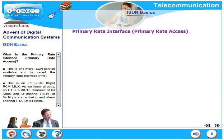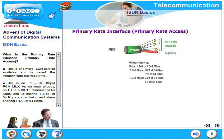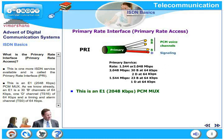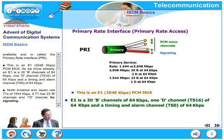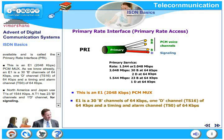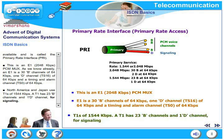Now let us look at PRI — Primary Rate Access. PRI is based on an E1 PCM MUX at 2 megabits. E1 consists of 30 B-channels of 64 kilobits, one D channel in time slot TS16 also at 64 kilobits, and a synchronization channel TS0 also at 64 kilobits — giving 30B + 1D + 1 synchronization channel. North America and Japan use a different standard called T1, at 1544 kilobits per second, with a frame structure of 23 B-channels and 1 D-channel for signaling.